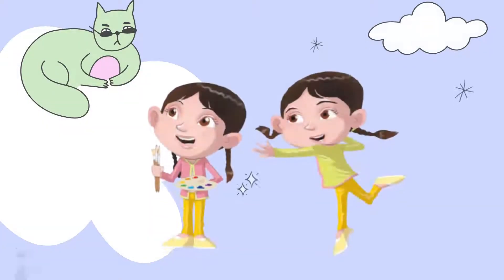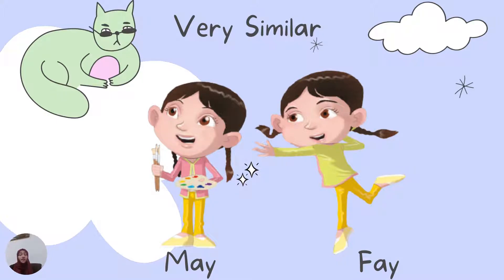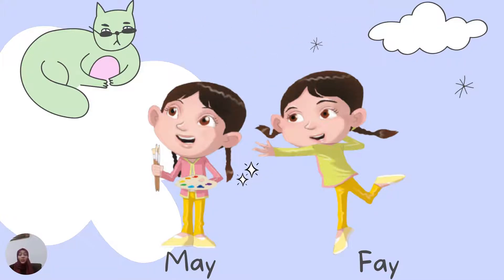Let us now look at these two girls. Do they look different or similar? Yes, they look very similar to each other. They are twins — May and Faye. They are very, very similar to each other, but they are also different in their ways. It's very difficult to say who is May and who is Faye, but in their behavior we know who is who.